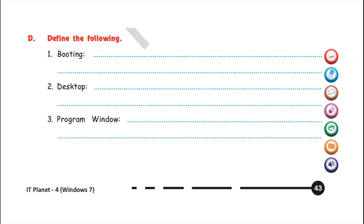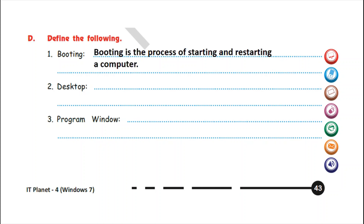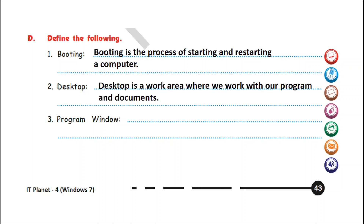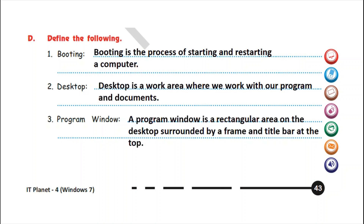Next exercise is exercise D: define the following. Number one is booting. Booting is the process of starting and restarting a computer. Number two: desktop. Desktop is a work area where we work with our programs and documents. Number three: program window. A program window is a rectangular area on the desktop surrounded by a frame and title bar at the top. Read and understand it carefully, children.